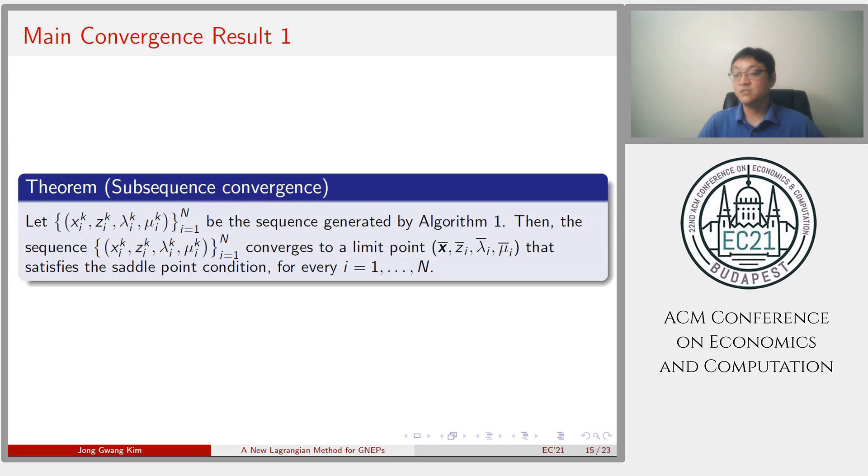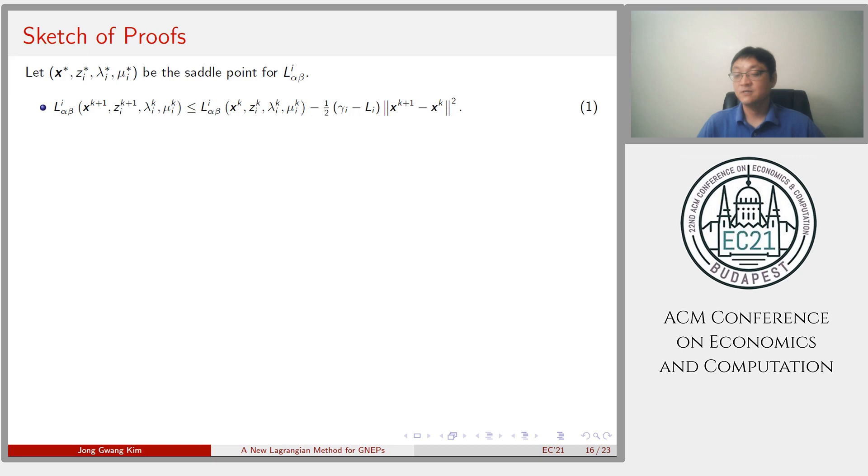We can have two main convergence results. First one is subsequence convergence, which means the sequence generated by algorithm converges to a limit point that satisfies the set-point condition. We note that any boundedness assumptions are not required to prove this. The proof is not too difficult. We need some intermediate results. The technical details are in the paper.